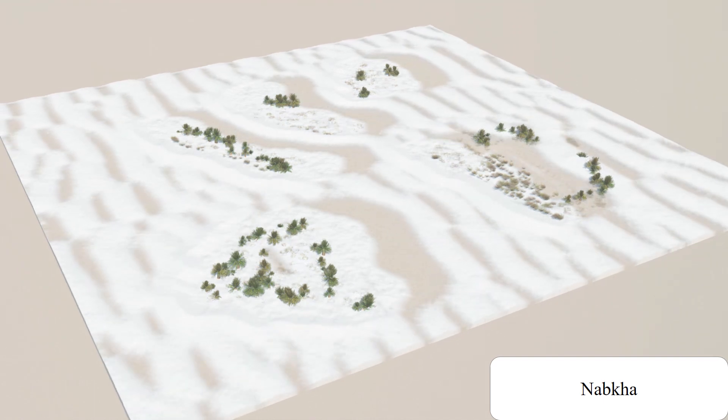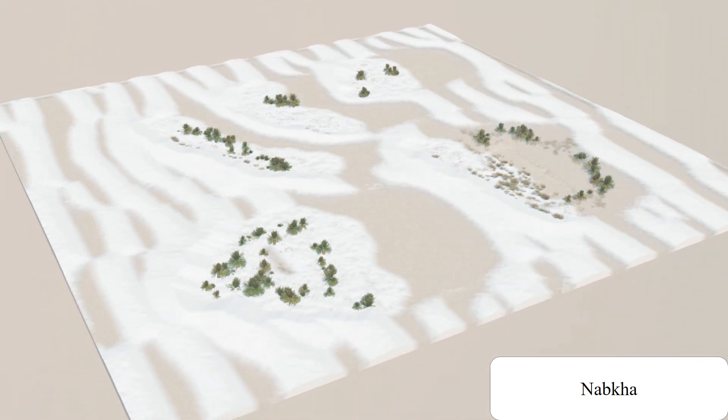Similarly, nabkha dunes form around vegetation and protect it by blocking the transport of sand.